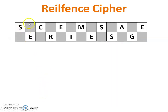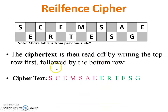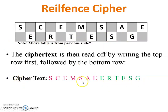This table comes from the previous slide. The cipher text is then read off by writing the top row first, followed by the bottom row. So the cipher text is: first row S-C-E-M-S-A-E, then second row E-R-T-E-S-G. So this is the cipher text of the given plain text.